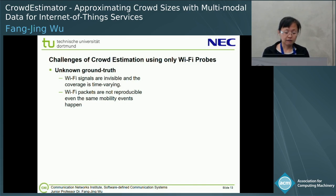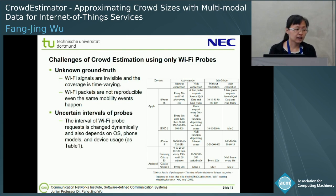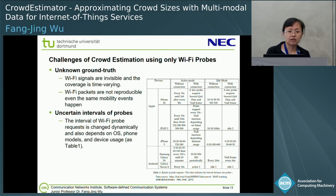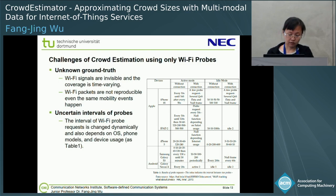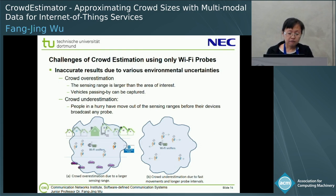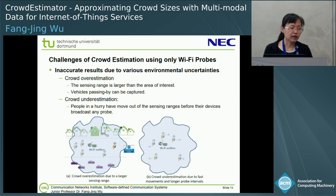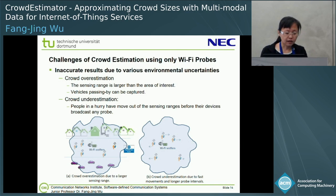Even when the mobility event is the same, there is also uncertainty in the Wi-Fi probe interval. The interval of Wi-Fi probe depends on the smartphone usage and also on the smartphone model. If your smartphone stays in sleeping mode, the Wi-Fi probe interval is longer. So the cloud estimation — sometimes if we just look at the Wi-Fi information, we may overestimate or underestimate the cloud.